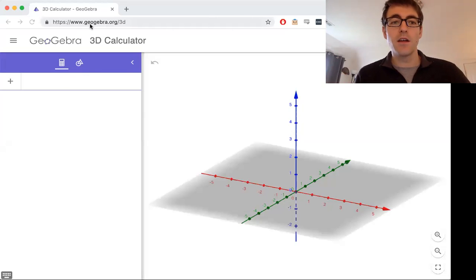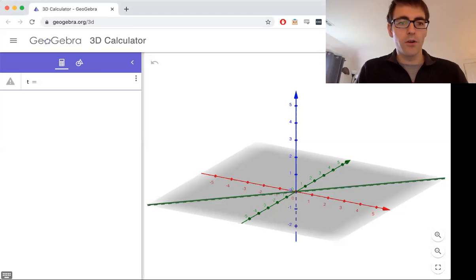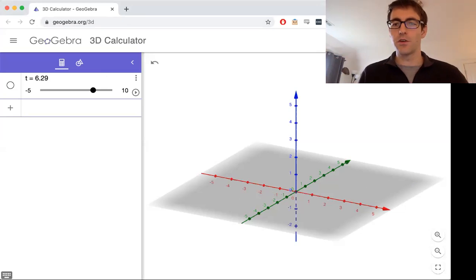So here we have GeoGebra.org/3D, which gives us the 3D calculator. The steps to making this work: first we need some variable. We're going to call it t, and we're going to say this equals 2 pi. I found that rounding up, instead of 6.28, call it 6.29, just so it gets all the way around. This is how much a function is going to revolve.